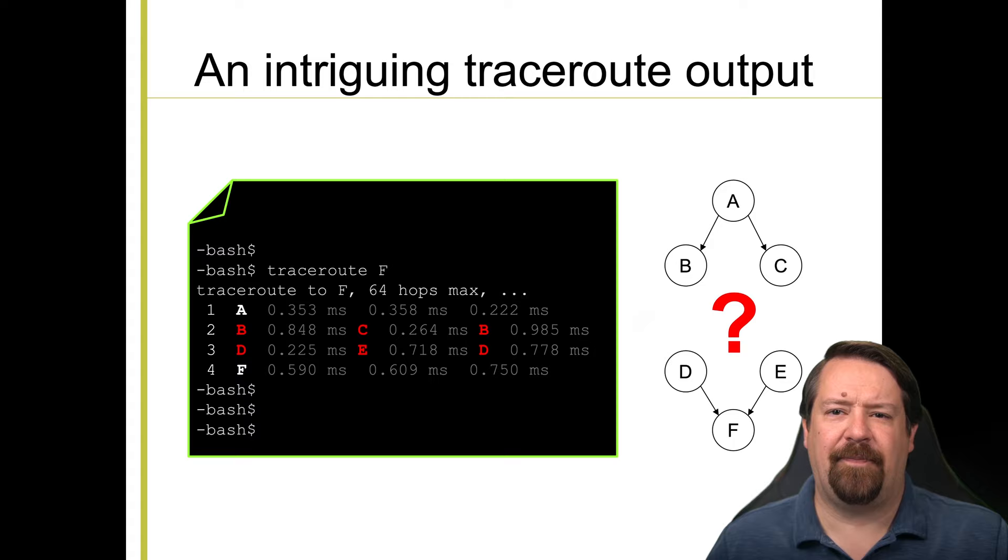Here's an example. This implementation of Traceroute is sending three probes per TTL. And while all of the probes, at hop 1 and hop 4 learn interface A and interface F respectively, the probes at TTL2 and 3 come back with two different interfaces at each hop. Now it's safe for us to infer that A is connected to both B and C, and likewise that both D and E connect to F. Although as we go on, we'll see even cases where that latter assumption doesn't hold true. But the real question in this scenario is what do the connections look like between hop 2 and hop 3?